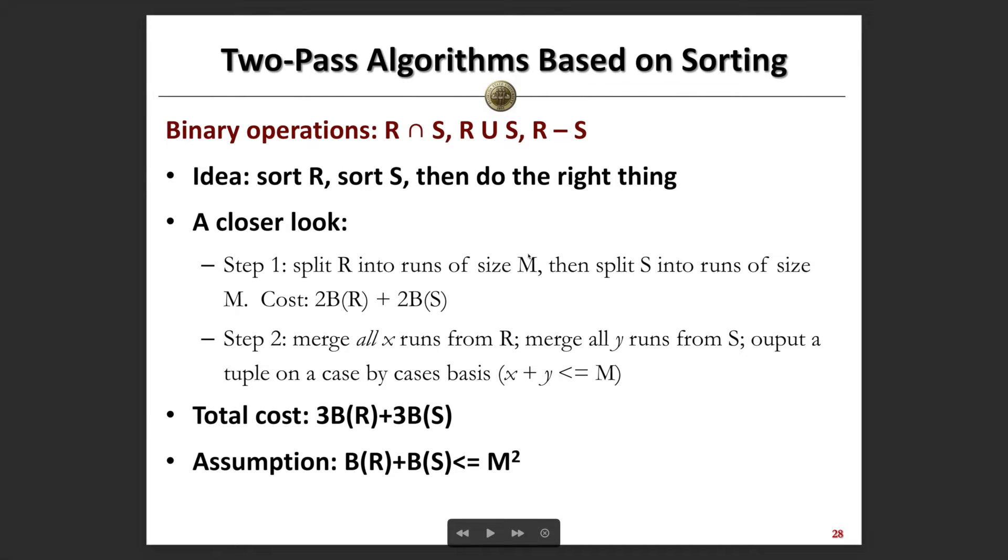Given two relations R and S, we can calculate the join and union between them. We can also calculate the difference between R and S by finding the tuples which exist in R only.